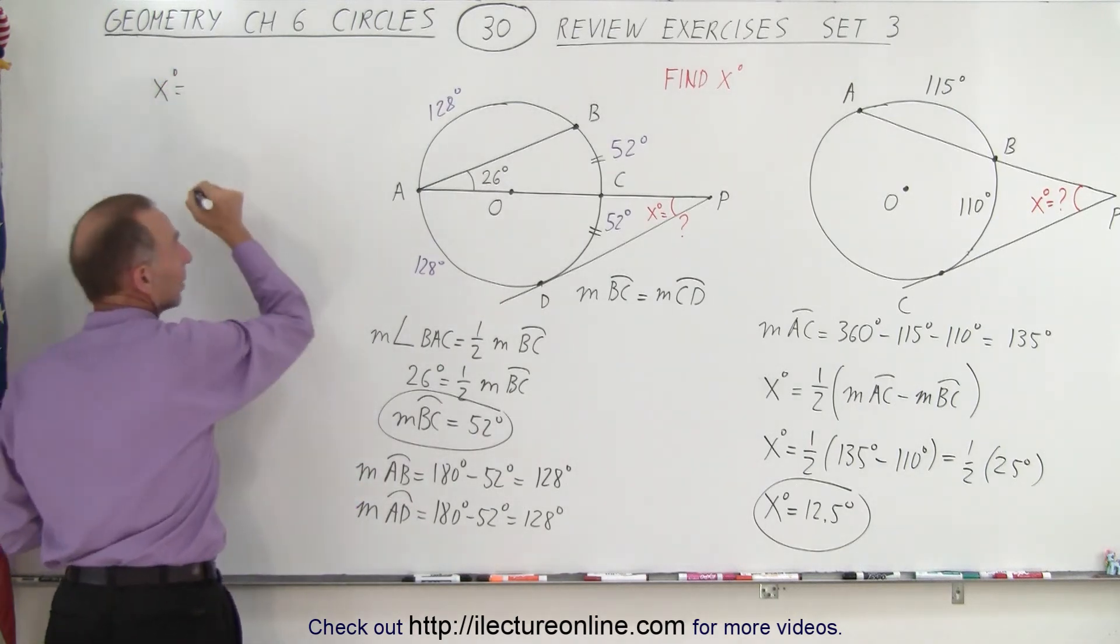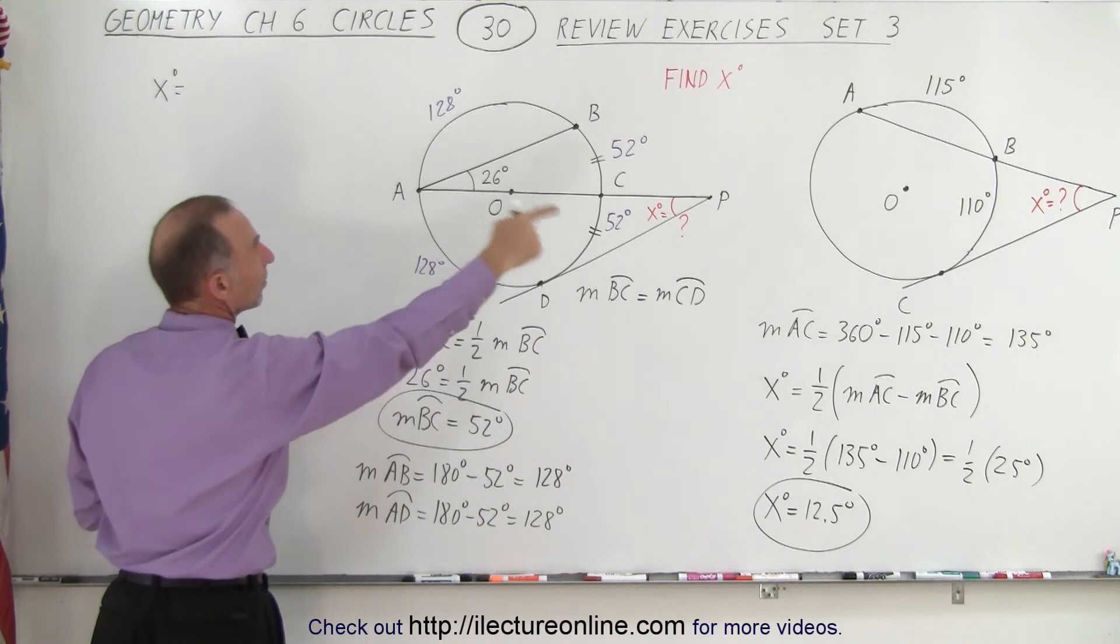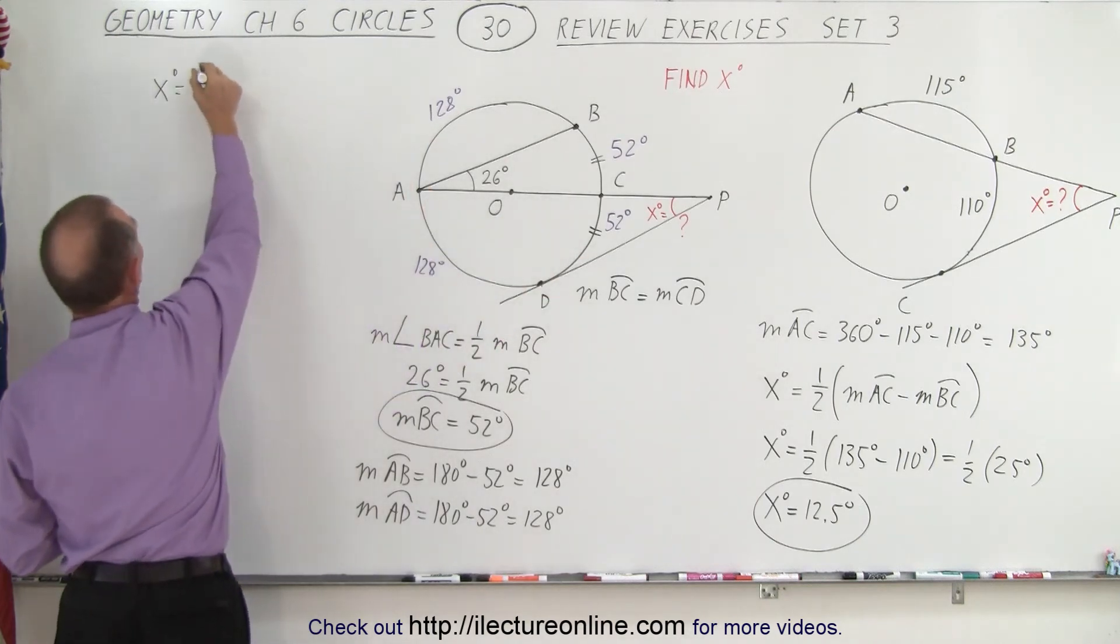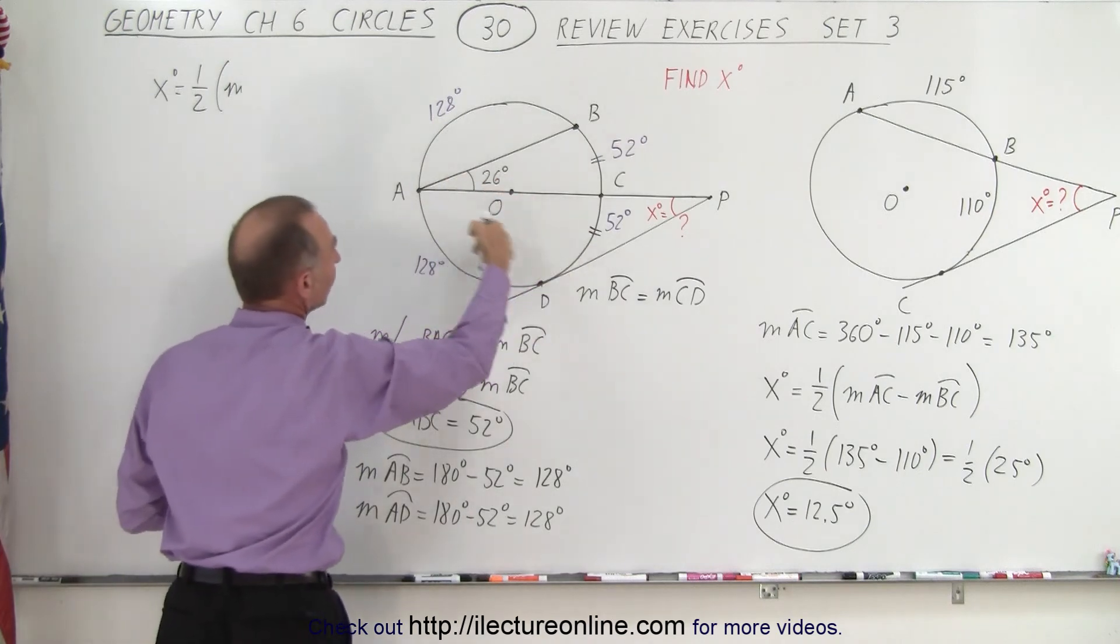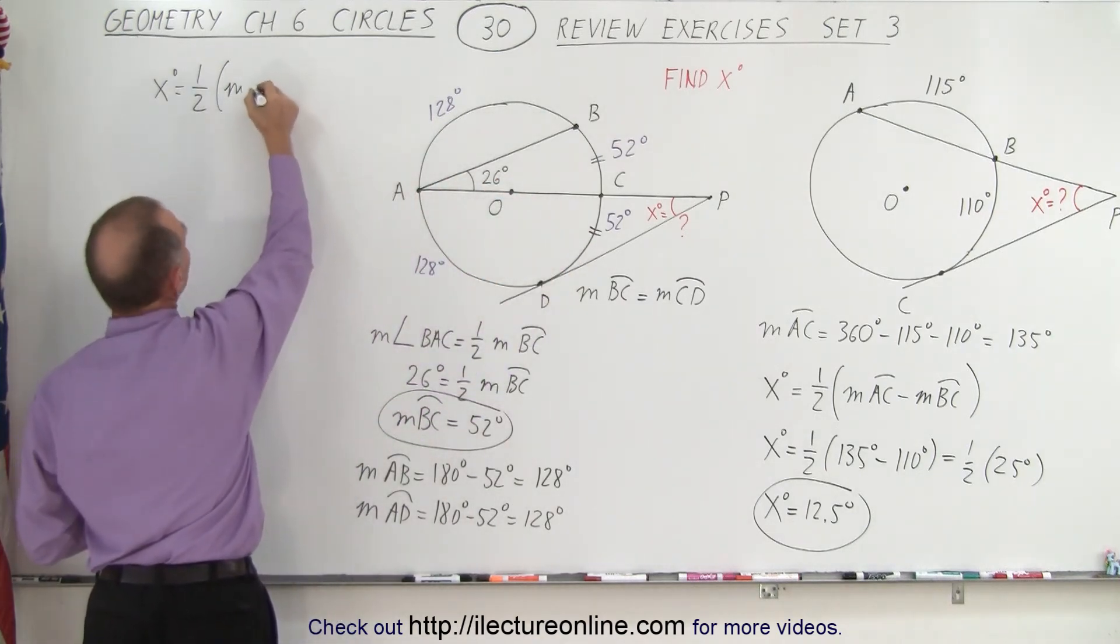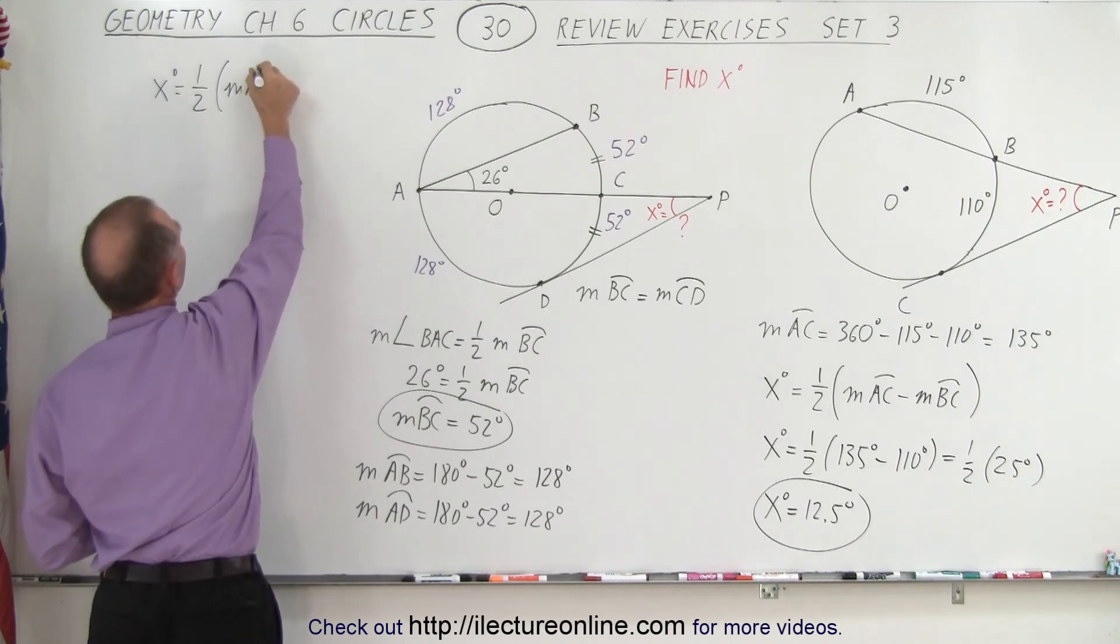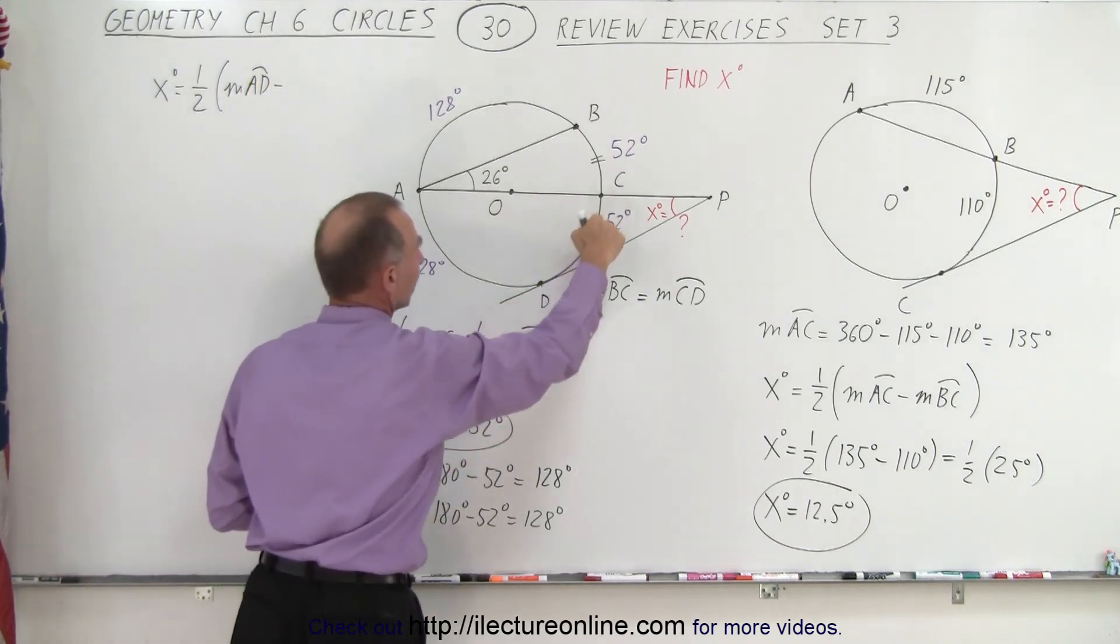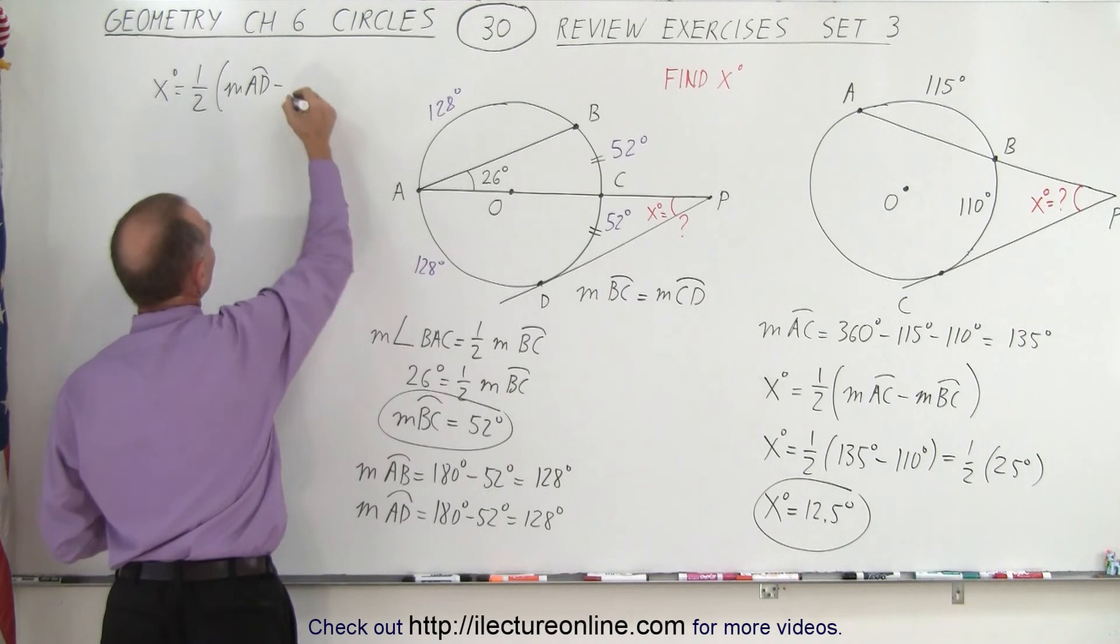Because now we can say that x degrees must equal, since it's outside the circle, it must equal one-half the measure of the outside arc, which is the measure from A to D, minus the measure of the inside arc, which is 52 degrees.